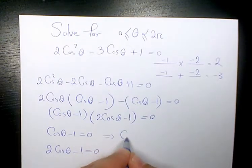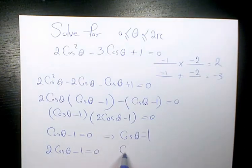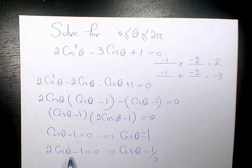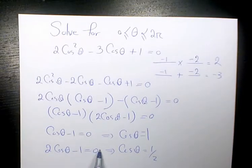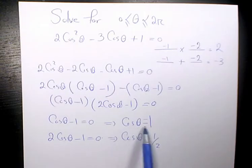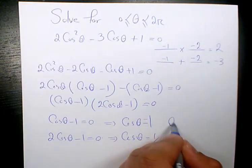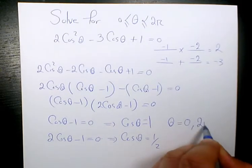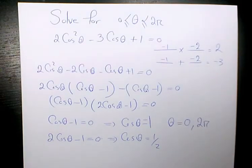From the first equation, cosine theta equals 1, so theta equals 0 and 2 pi, since cosine 0 is 1 and cosine 2 pi is also 1. From the second equation, we have cosine theta equals 1 over 2.